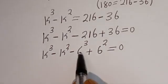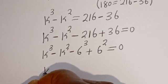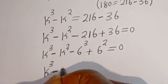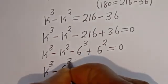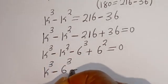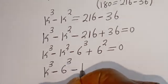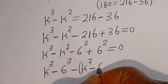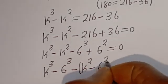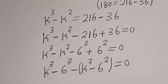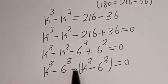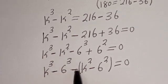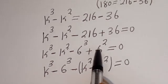Then we can group this as: k to the power of 3 minus 6 to the power of 3, then minus k squared and minus 6 squared. If we open the bracket with the negative sign — minus multiplied by k squared gives minus k squared, and minus multiplied by minus 6 squared gives plus 6 squared.